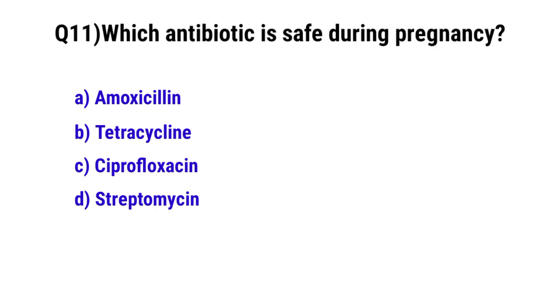Question No. 10: What is the best position for a mother in cord prolapse? The correct option is A: modified Sims position (knee-chest/Moxiline position).